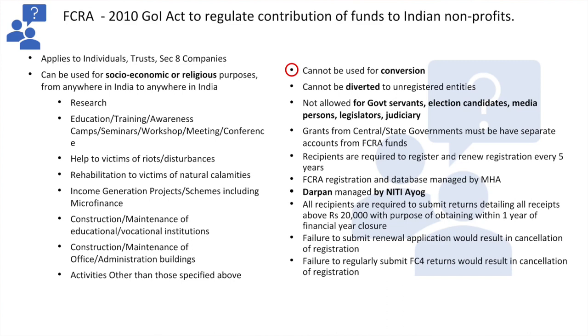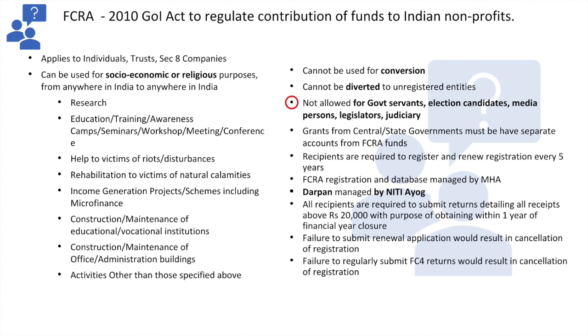There are restrictions on who can obtain this money. It cannot be used for conversion — it is very explicitly stated that this money cannot be used as enticement for conversion. It cannot be diverted to any organization which is not registered as an FCRA entity. Government servants, election candidates, people in the media, legislators, and people involved in the judiciary are not allowed to accept this money.